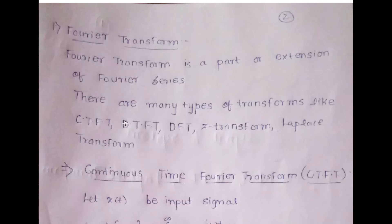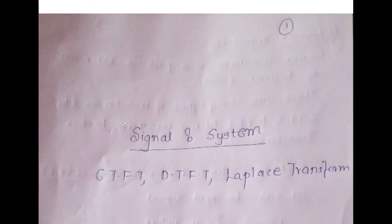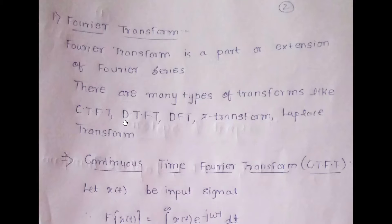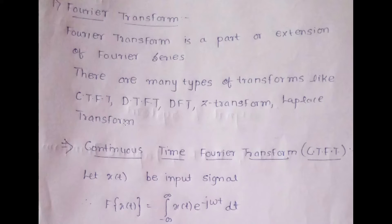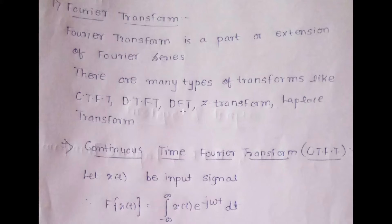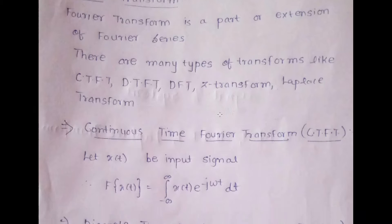Starting with CTFT — the continuous time Fourier transform. Fourier transform is basically a part or extension of Fourier series. There are many types of transforms like CTFT, DTFT, DFT, Z-transform — a video on Z-transform is already uploaded on my YouTube channel in the signal systems playlist — Laplace transform, and so on.